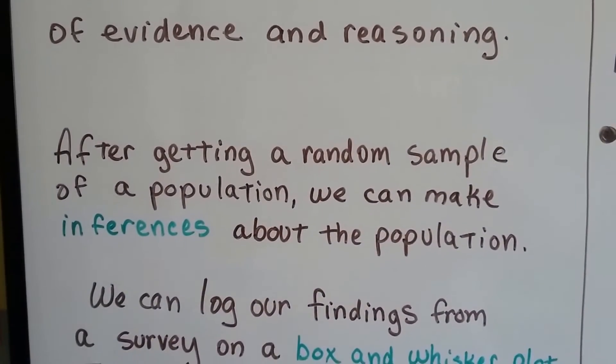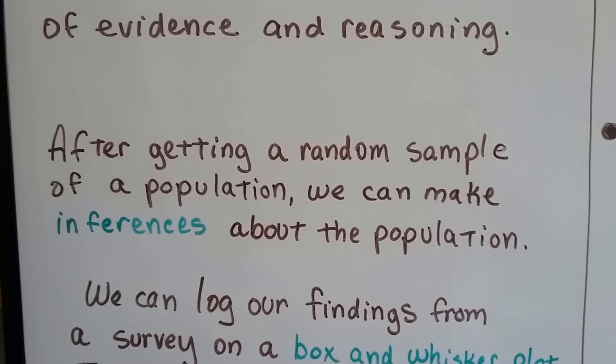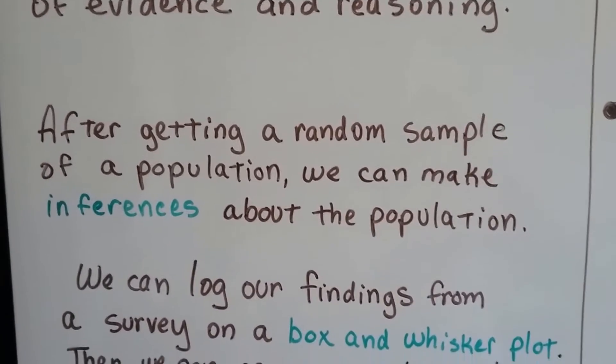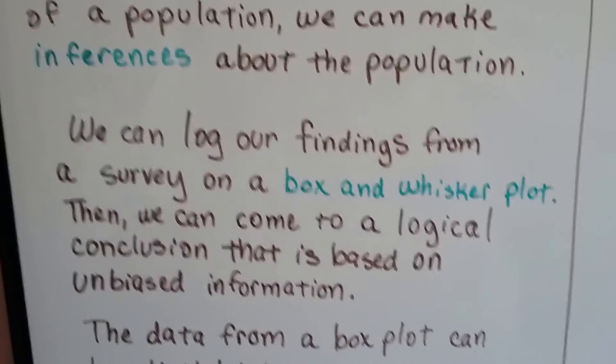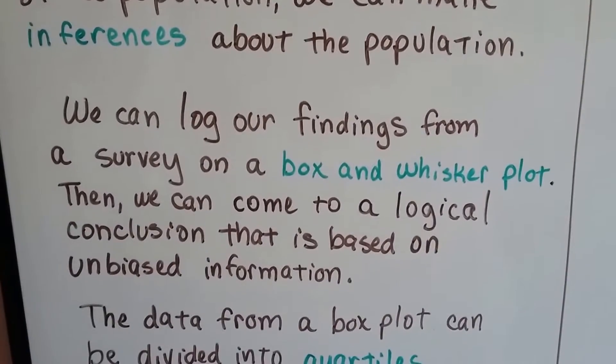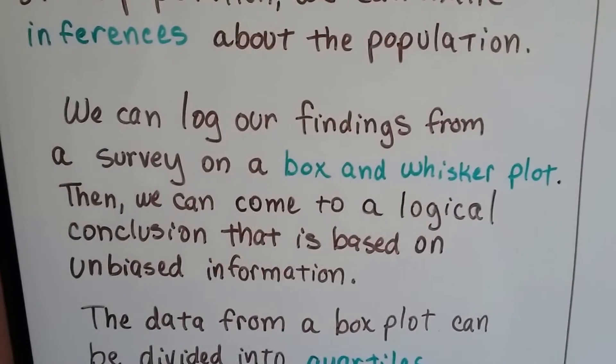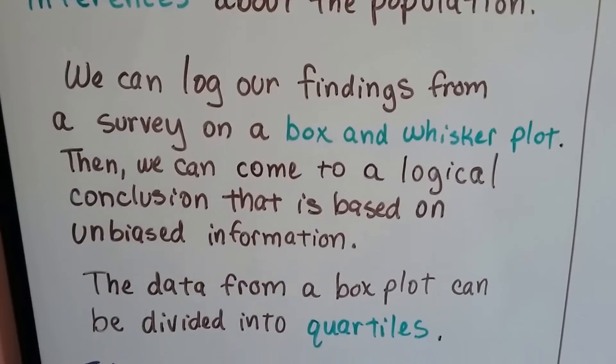After getting a random sample of a population, we can make inferences about the population. We can log our findings from a survey on a box and whisker plot. Then we can come to a logical conclusion that's based on unbiased information.